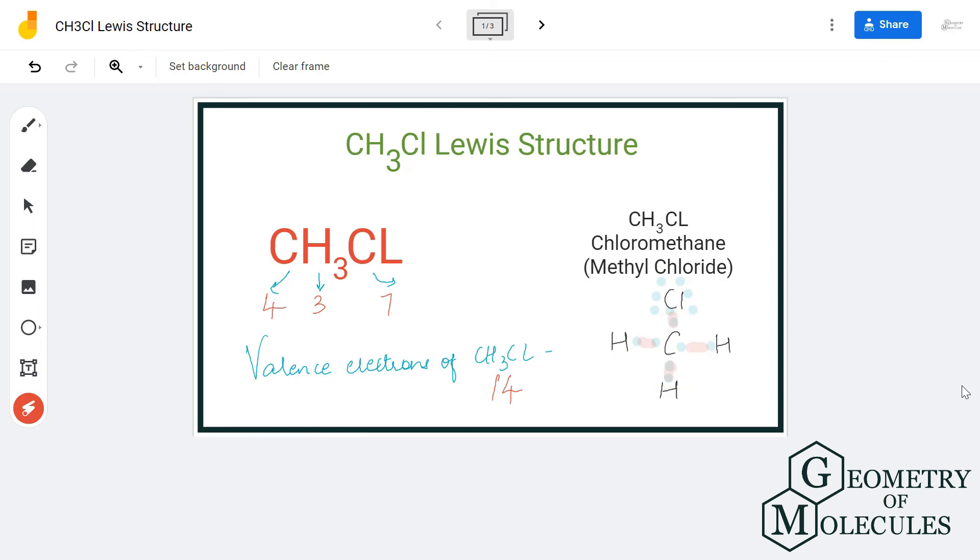So this is the Lewis dot structure of CH3Cl.